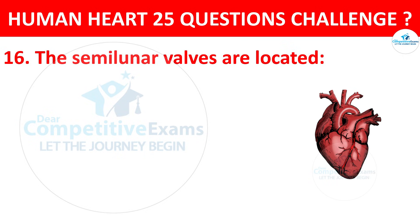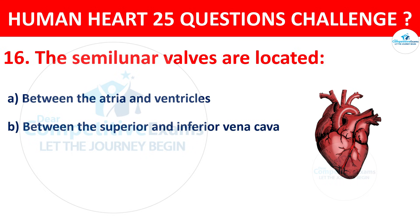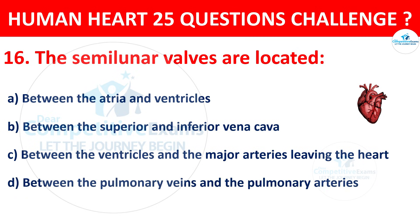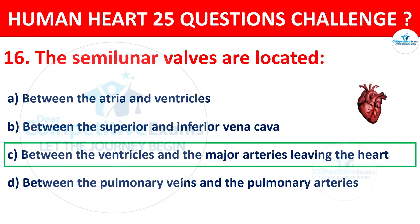Question number 16. The semilunar valves are located: between the atria and ventricles, between the superior and inferior vena cava, between the ventricles and the major arteries leaving the heart, or between the pulmonary veins and the pulmonary arteries? The correct answer is C, that is between the ventricles and the major arteries leaving the heart.